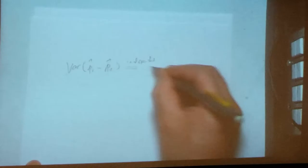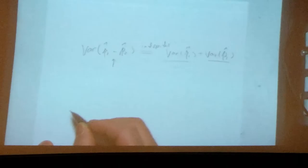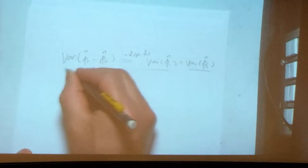Under the independence assumption for the population, you will have the variance of P1 hat plus variance of P2 hat. Make sure you don't make mistakes with the variance here. A lot of times there's a negative sign, but you don't say this is a negative and this is a negative.